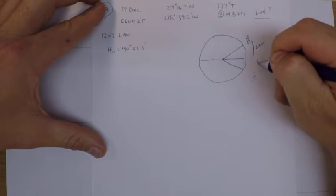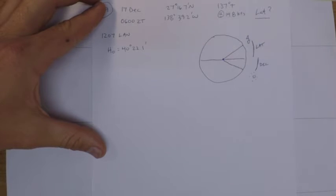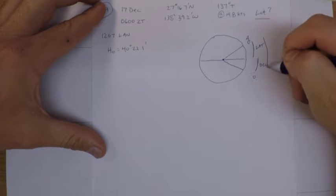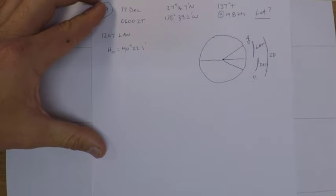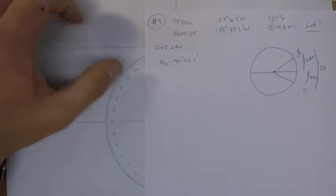This is declination here, the Sun's distance north or south of the equator. And then this value here is zenith distance, which is 90 minus our sextant reading. So this should actually be a pretty straightforward problem.